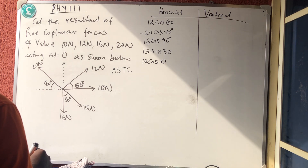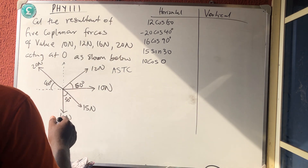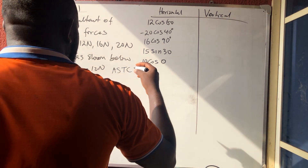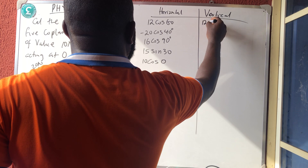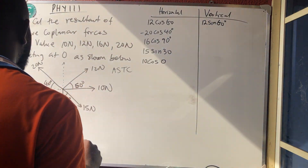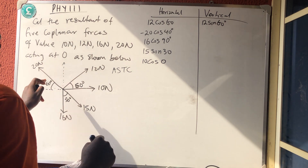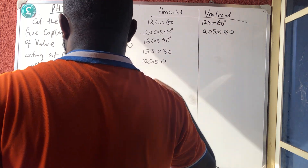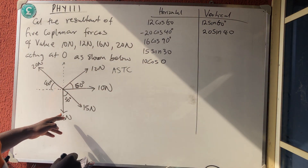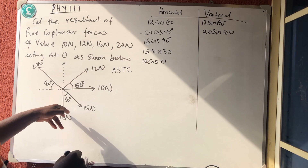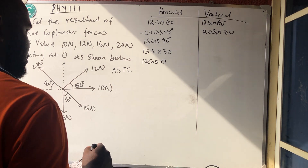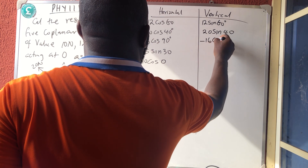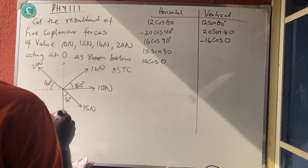Now let's resolve to the vertical. Starting with the first force: moving away from 60°, so it's 12 sin 60°. The next force is away from 40°, giving 20 sin 40°. The next one moves towards itself vertically, so it's minus 16 cos 0°.